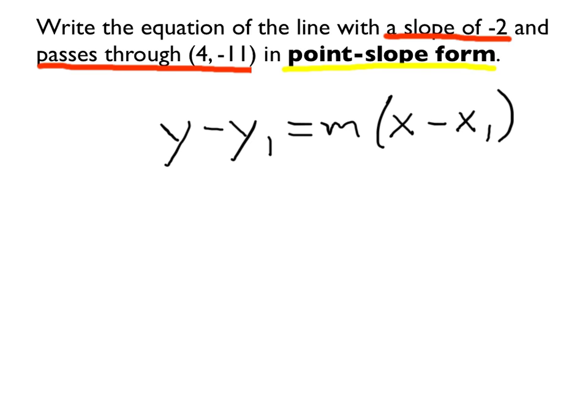First, I know that the x-coordinate of the point is 4, and so that means x1... So the x-coordinate was 4, so we'll substitute that value. The y-coordinate was negative 11, and the slope was given as negative 2.